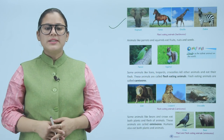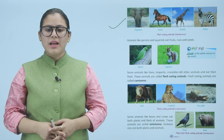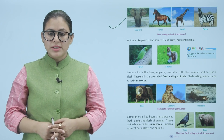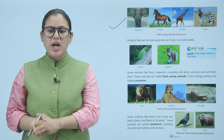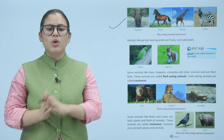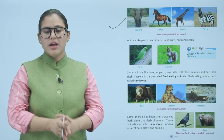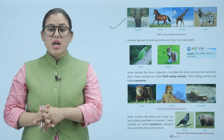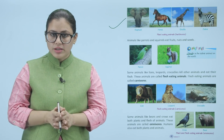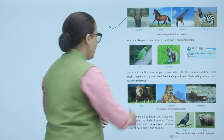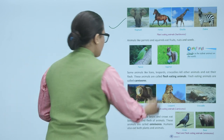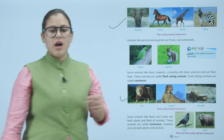Animals like lions, leopards, and crocodiles kill other animals and eat their flesh. These animals are called flesh-eating animals. Flesh-eating animals are called carnivores. For example, all these animals shown are carnivores.